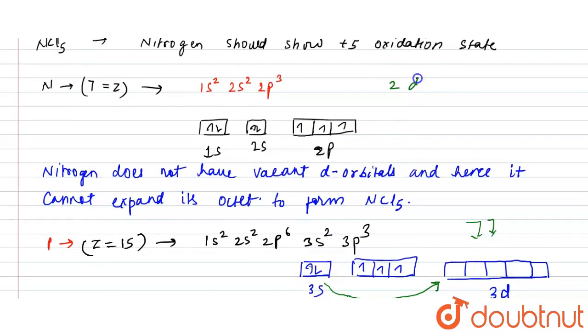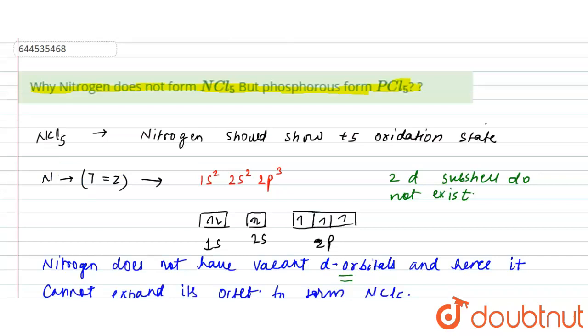Because 2d subshell does not exist. So that is why nitrogen cannot expand its octet because of the absence of vacant d-orbitals, and hence it cannot form NCl₅. This is the required reason for the given question.